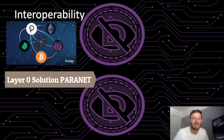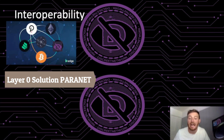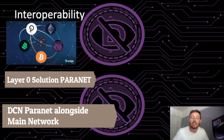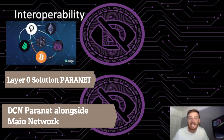The main Discreet network can be seen like a hub on a bicycle wheel, with all the spokes representing things like contract data, user data, history of transactions, etc. However, the method by which computation is achieved is decoupled from the main Discreet network altogether. This Discreet Compute Network, or DCN, is a paranet alongside the main Discreet network.